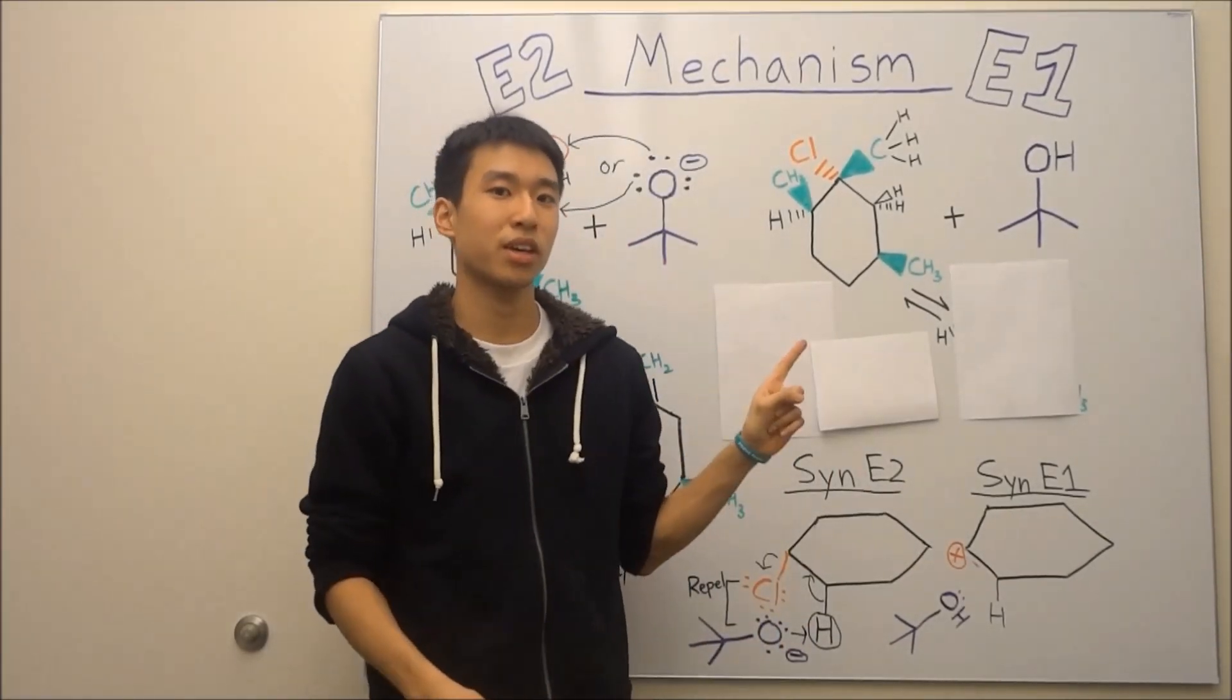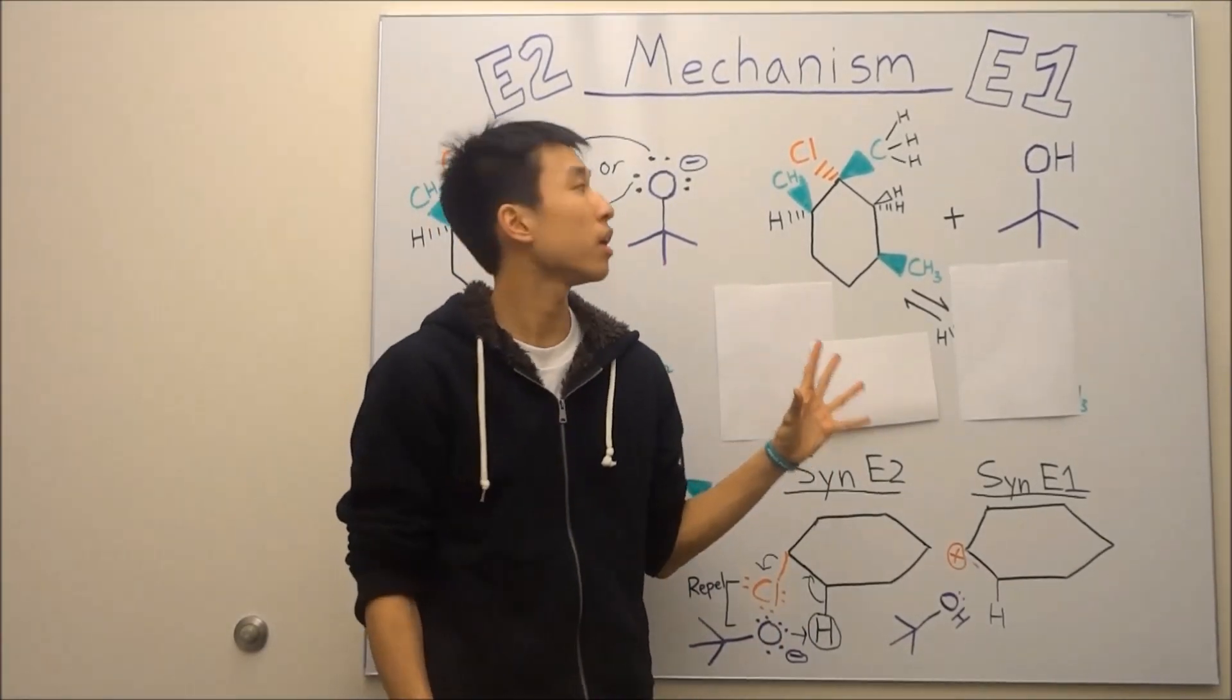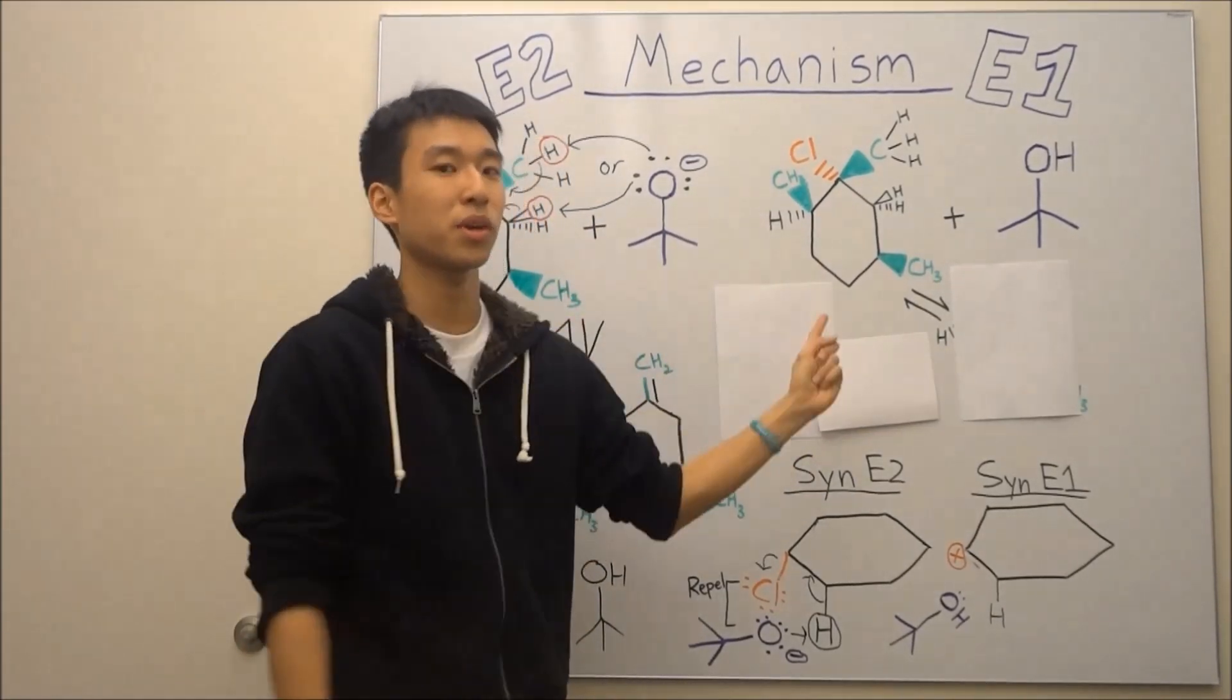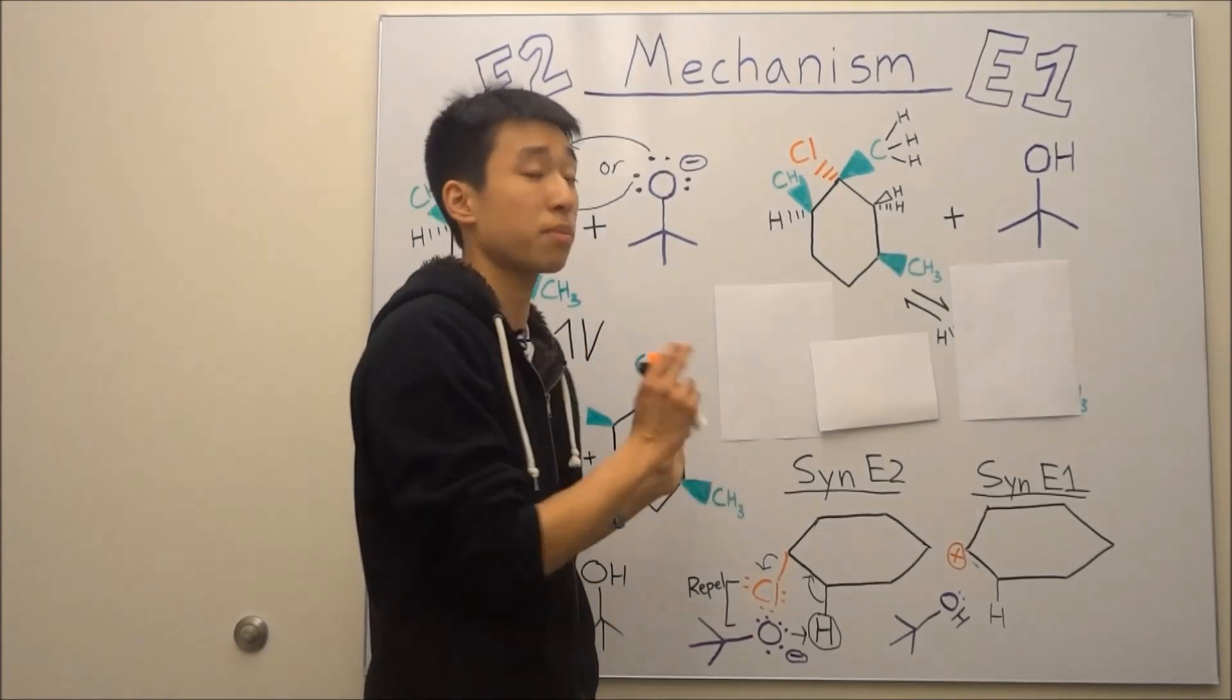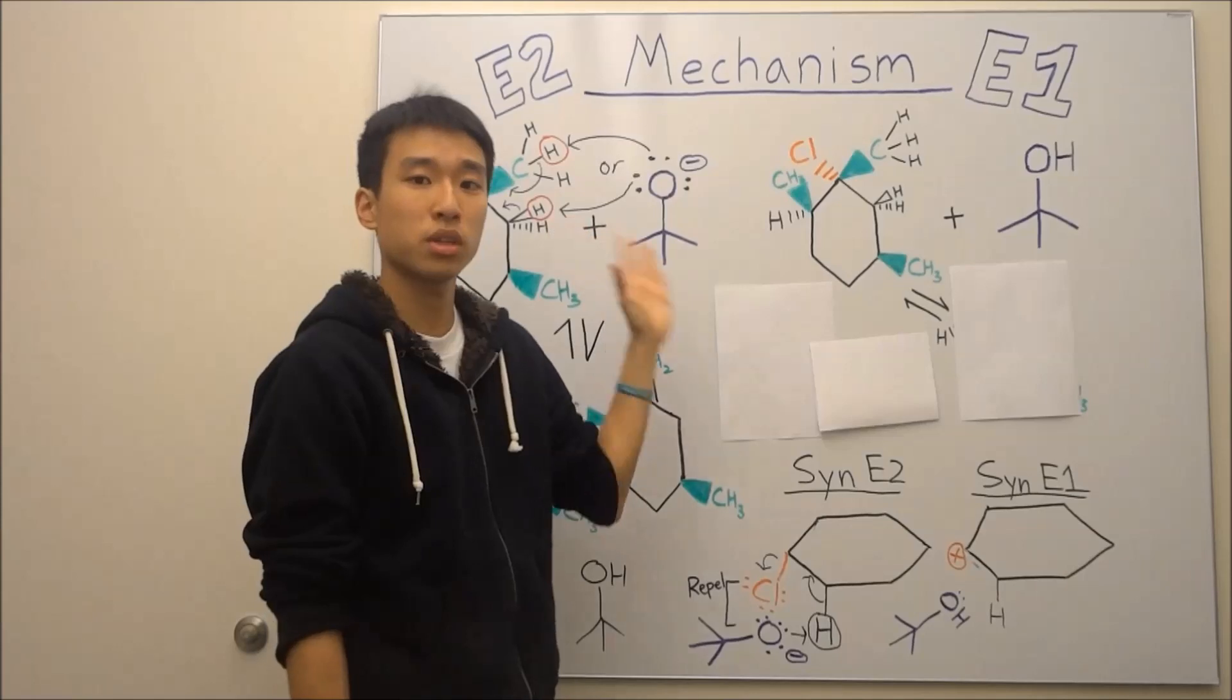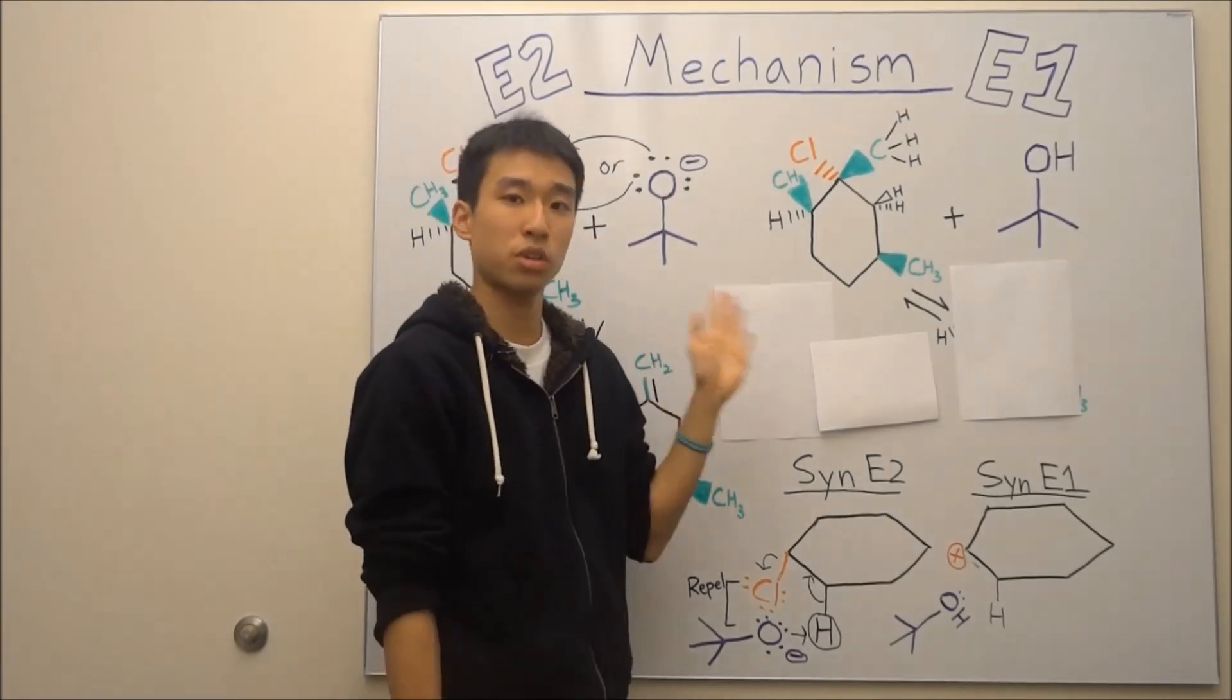So now we're going to do the E1 mechanism. After this part, you should be able to see some key differences and key similarities with E2 and E1 and be able to distinguish the mechanisms nice and easy. All right, so here's our substrate, same thing as before. We don't need to worry about anti-beta hydrogens. I'll show you why in a bit.